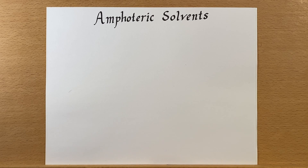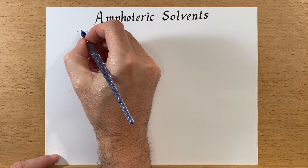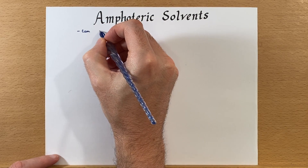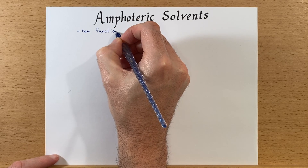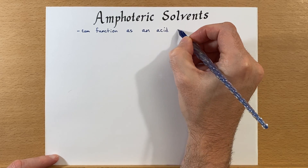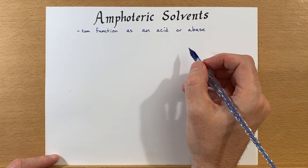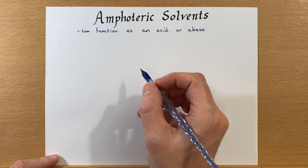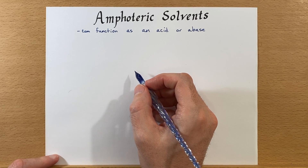Amphoteric solvents are substances that can function as an acid or a base. You're already familiar with one amphoteric solvent — that is water.